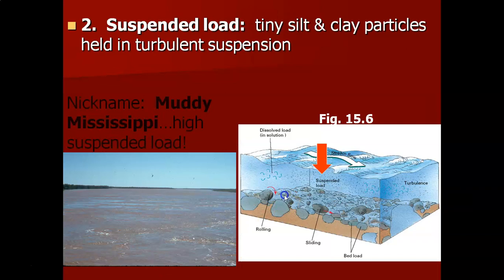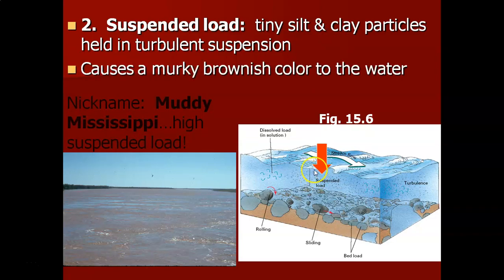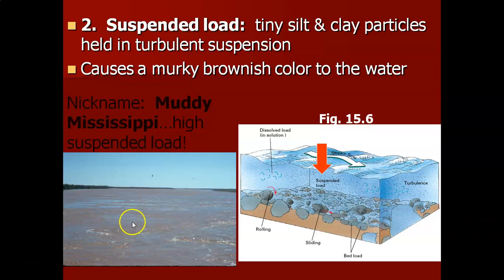The second way rivers carry their load is the suspended load — the tiniest particles of silt and clay so tiny they can be held in constant turbulent suspension throughout the water column. Since they're held in suspension throughout the depth of the water, it gives the water a murky color, usually a murky brown, which is a pretty good indicator of a high suspended load. The Mississippi River has a tremendous suspended sediment load — it's called the Muddy Mississippi.